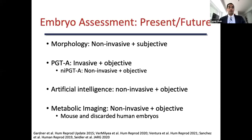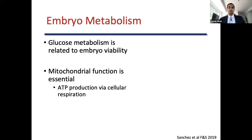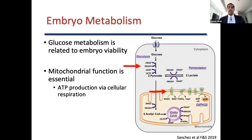Our group has been utilizing a novel, non-invasive, and objective metabolic imaging modality called fluorescence lifetime imaging microscopy, or FLIM, which has shown significant results in the mouse model and in human discarded embryos. Glucose metabolism is related to embryo viability. Specifically, mitochondrial function is essential to the viability of embryos due to the necessary ATP produced via glycolysis, the Krebs cycle, and the electron transport chain. NADH is essential in both the cytoplasm and in mitochondrial complex 1, with FAD essential in mitochondrial complex 2.